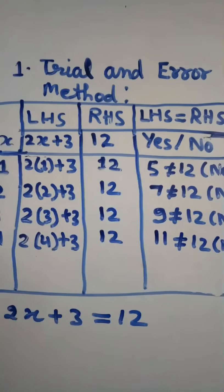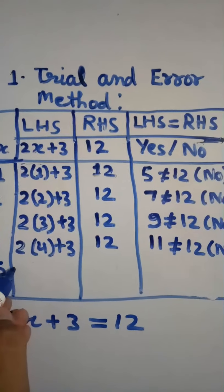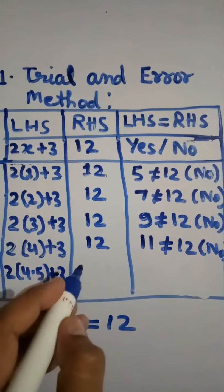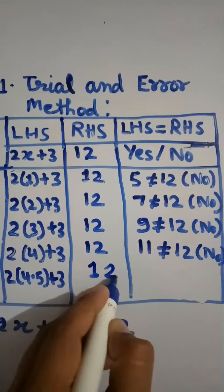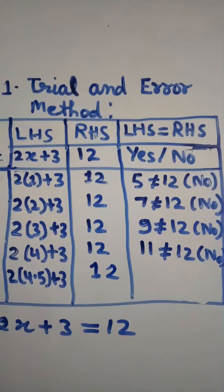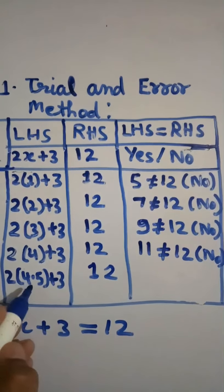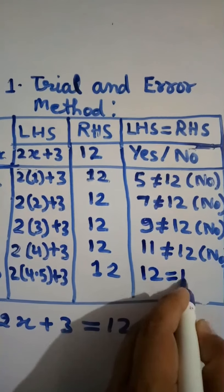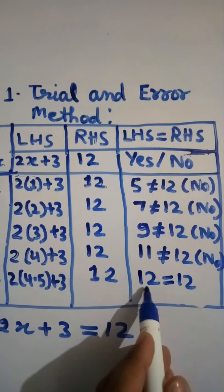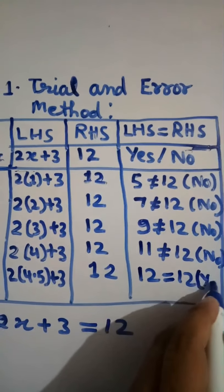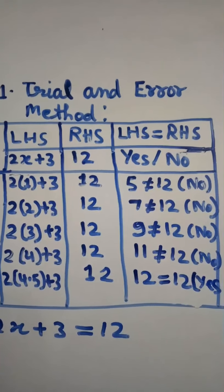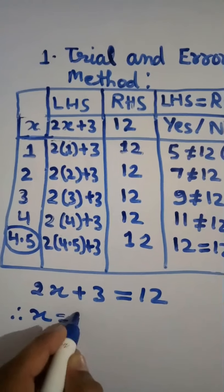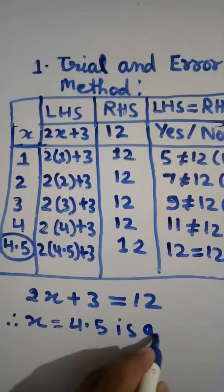Now put x equal to 4.5: substitute x with 4.5 in LHS: 2 times 4.5 is 9, plus 3 is 12. RHS is 12. LHS equals RHS — both sides are equal, so the answer is yes. x equal to 4.5 is the correct solution of this equation.